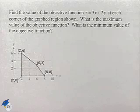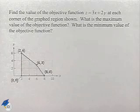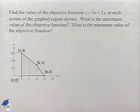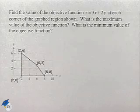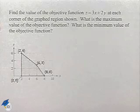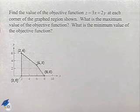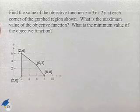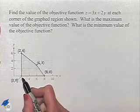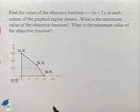Now let's look at finding the value of an objective function. Find the value of the objective function z equals 3x plus 2y at each corner of the graphed region shown. What is the maximum value of the objective function? What is the minimum value of the objective function? We have four different corners on our graphed region.